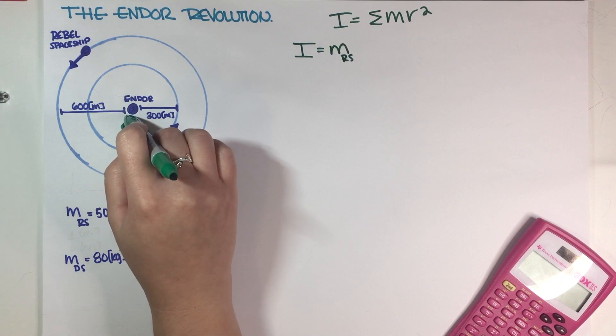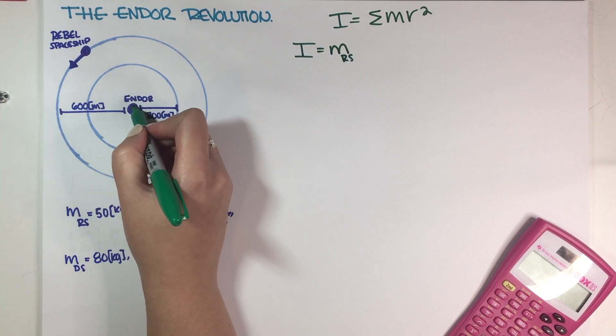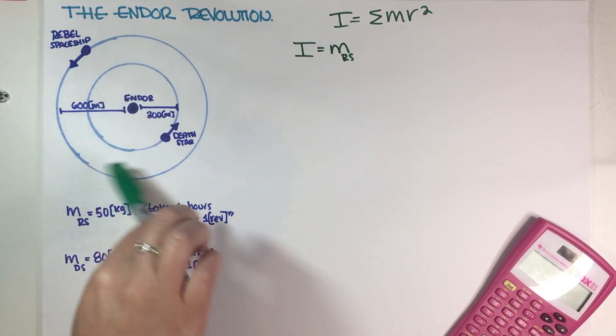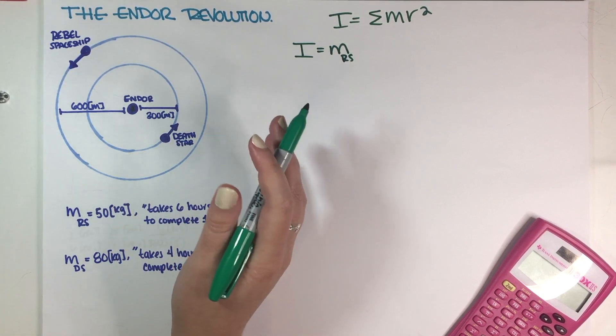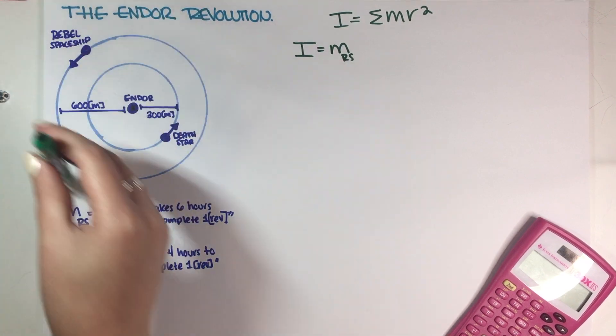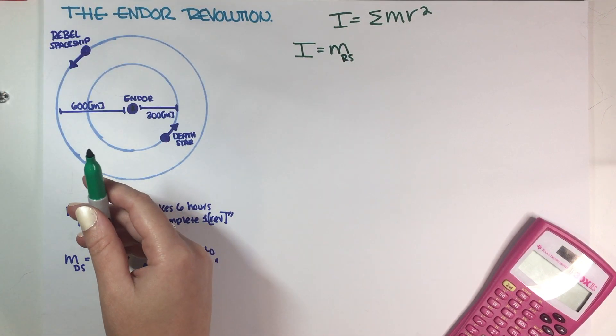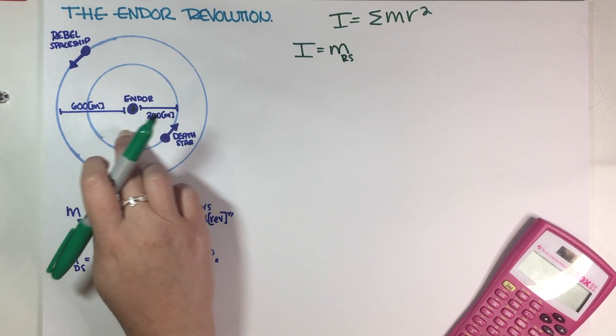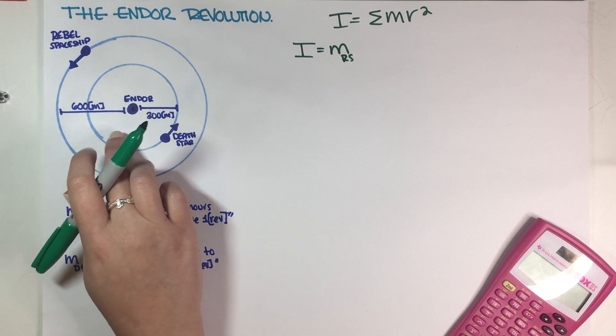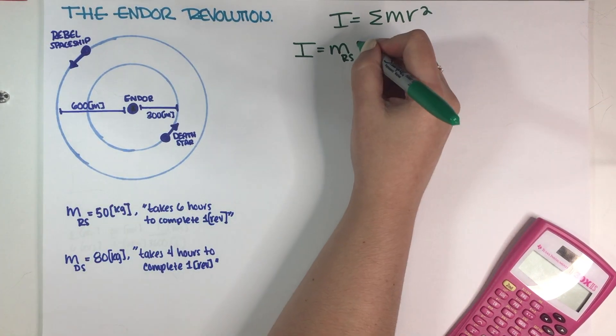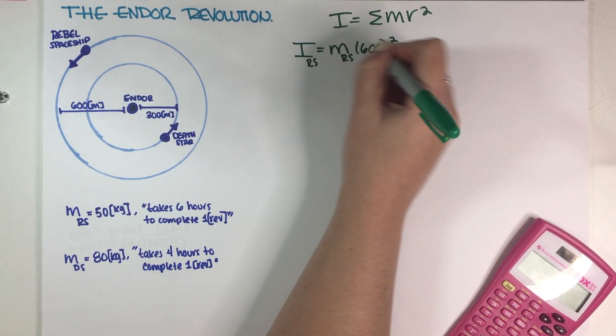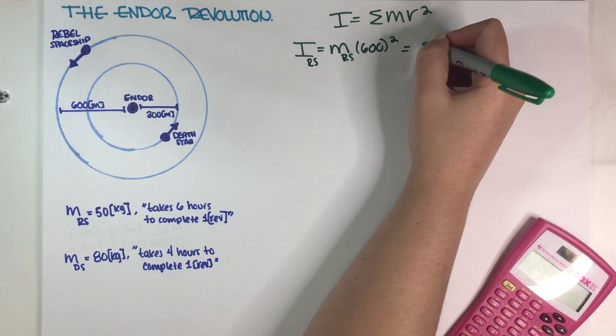For part A, the moment of inertia in this case would be mass of the Rebel spaceship times the distance from the pivot point to the Rebel spaceship. Endor would be the pivot point because both the Rebel spaceship and the Death Star are rotating around it. So even though they are not attached to each other, if you are rotating around something, then that something is a pivot point.